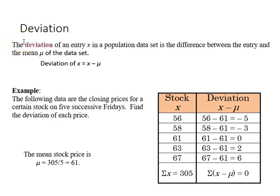The deviation shows the difference between an entry x in a population data set and the mean. We have an x value subtract the mean and that gives us our deviation.